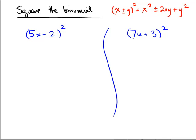We can square the first one, square the last one, and then double the product in the middle keeping the same sign.